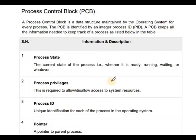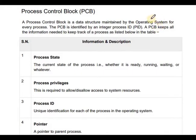We have already discussed the states of a process — the ready state, running state, waiting state, and others. A process is stored in main memory. That data structure is called the Process Control Block. Process Control Block is a data structure which is used and maintained by the operating system for every process.